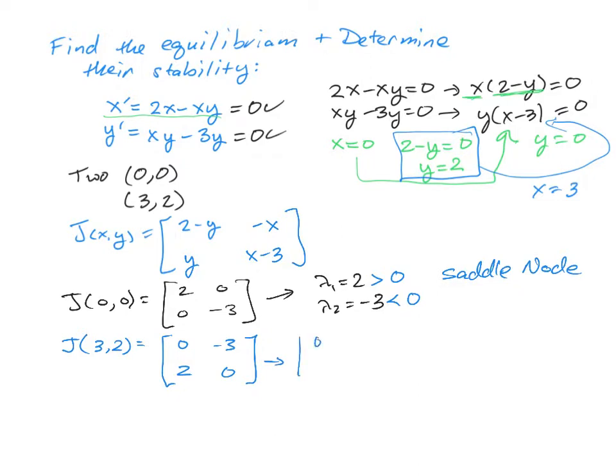So when we find the eigenvalues, we're going to have the determinant of 0 minus lambda, negative 3, 2, and 0 minus lambda. And that's going to multiply and make lambda squared plus 6 is equal to 0. So lambda is equal to plus or minus the square root of 6 times i. And that would appear to be a center, but it's actually inconclusive because centers are not preserved when you linearize. So we really don't know what the status of that critical number is. In the next part of the presentation, you'll see us looking at the phase plane for this.